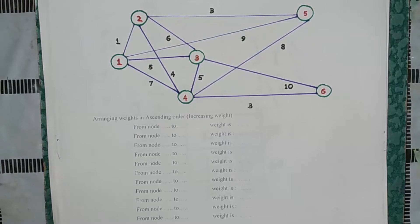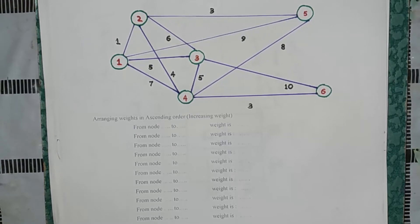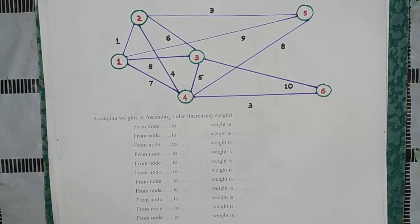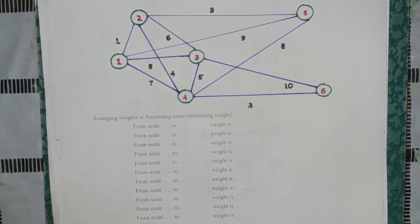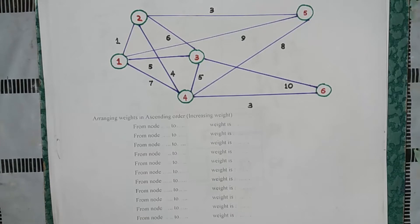Here we have a network problem. Nodes are 6. Arcs are more than the nodes. We are going to talk about the minimum spanning tree. First, we were going to talk about Prim's algorithm, but now we will talk about Kruskal's method.